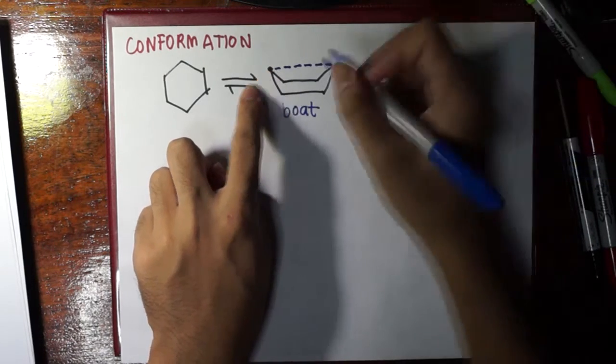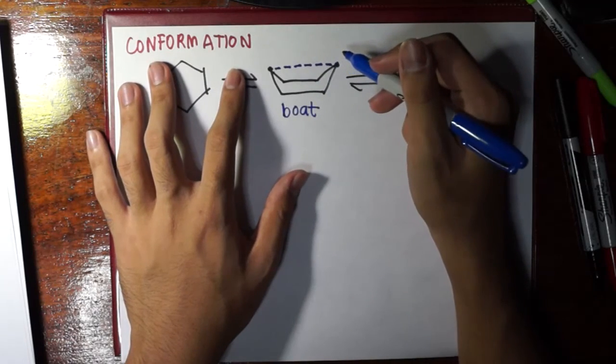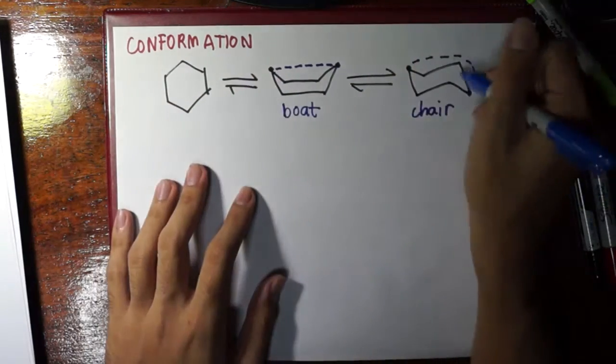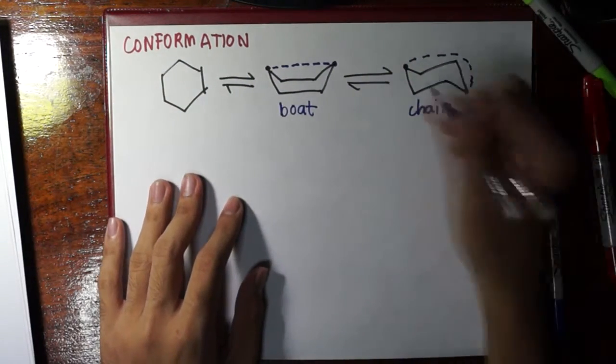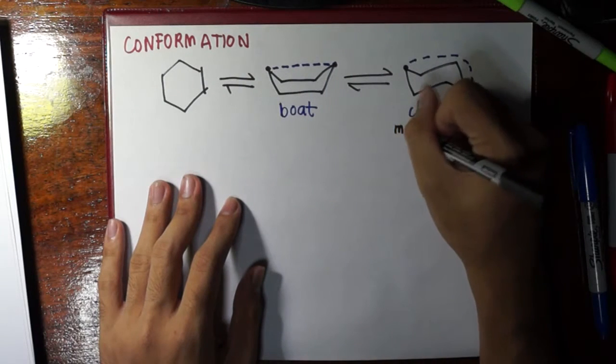So you would say that, well, since electrons hit each other, this one is less stable because the electrons are nearer to each other as compared to the chair. That's why you say that the chair conformation for cyclohexane is the most stable.